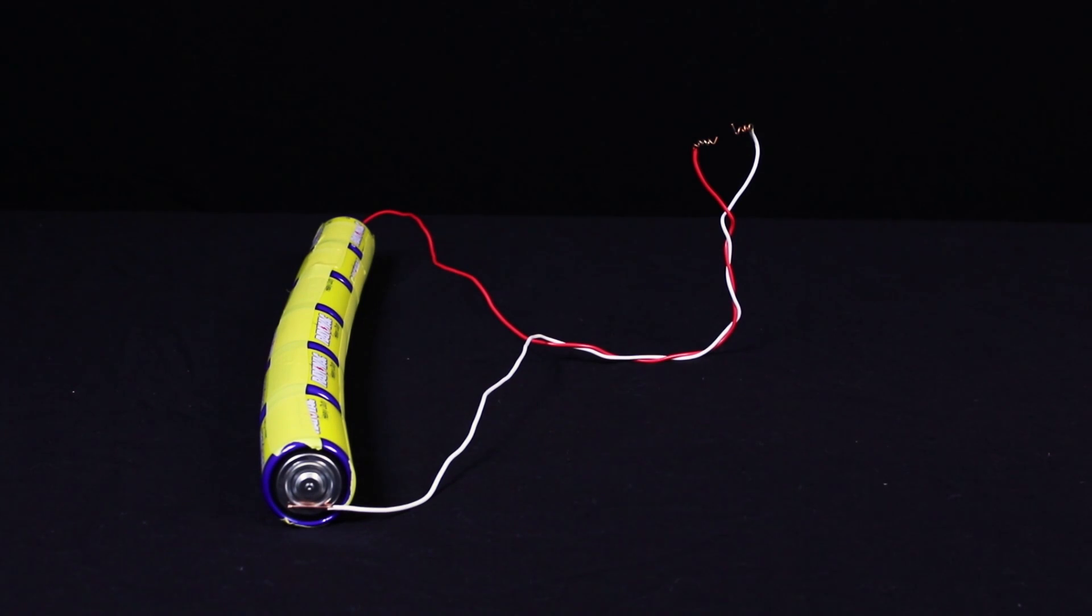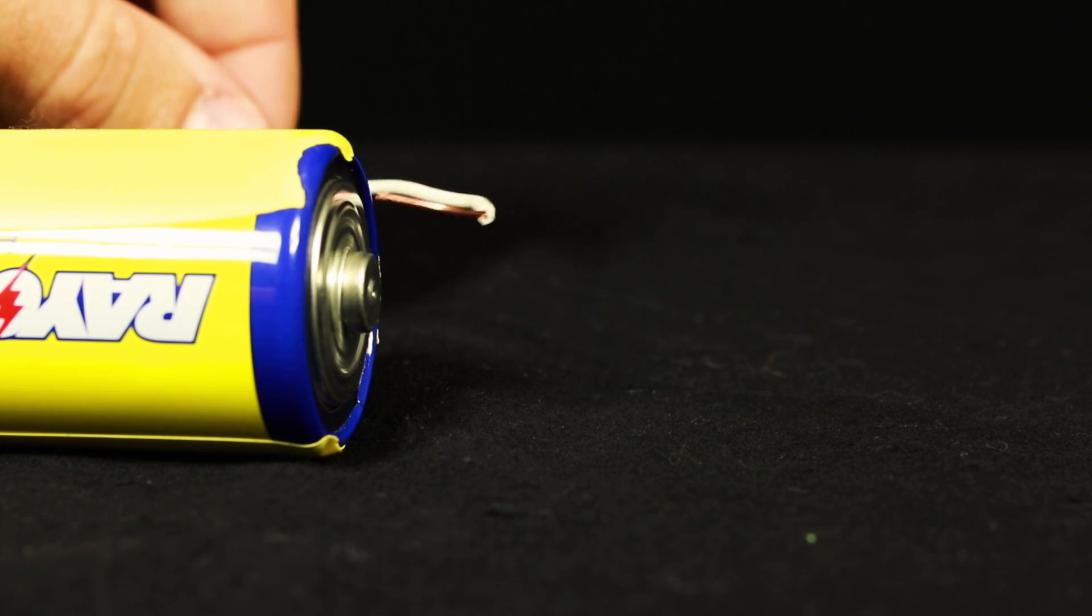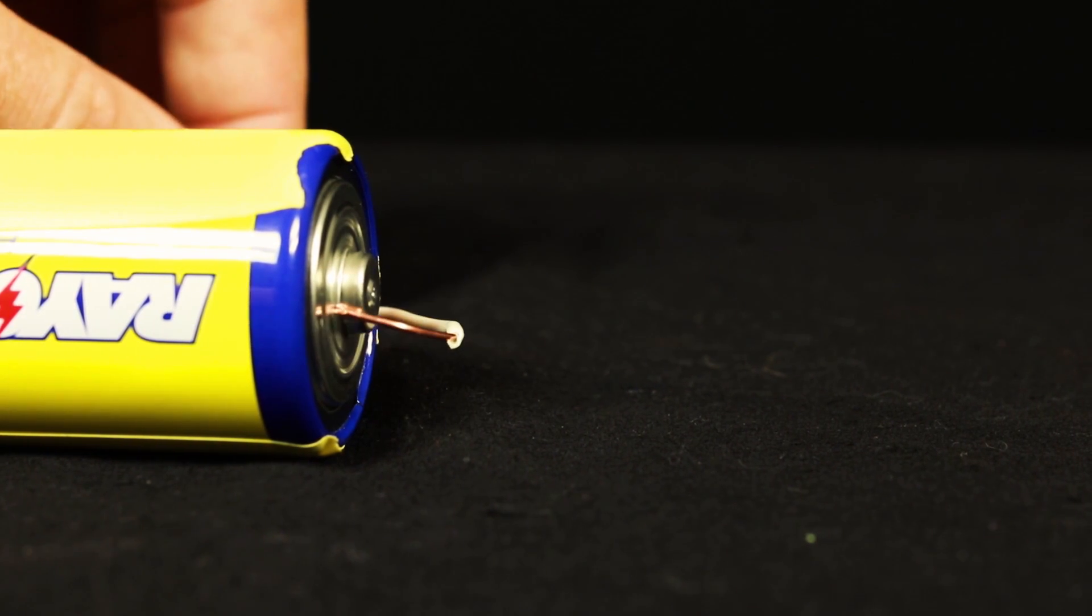Now your setup is ready for the final step. Connect the other end of the wire to the positive terminal of the battery. The electricity passing through the graphite will cause it to begin glowing.